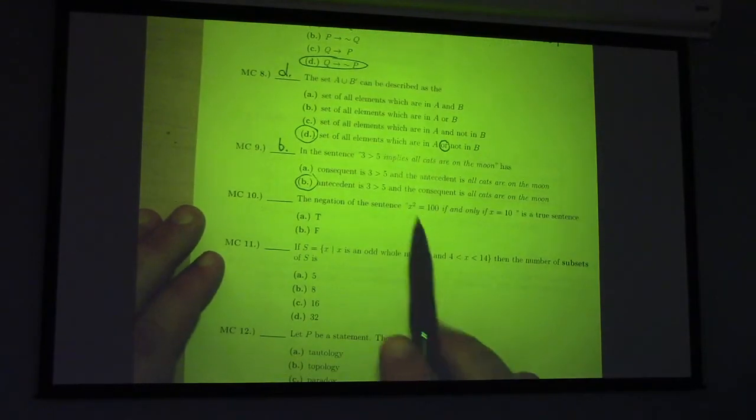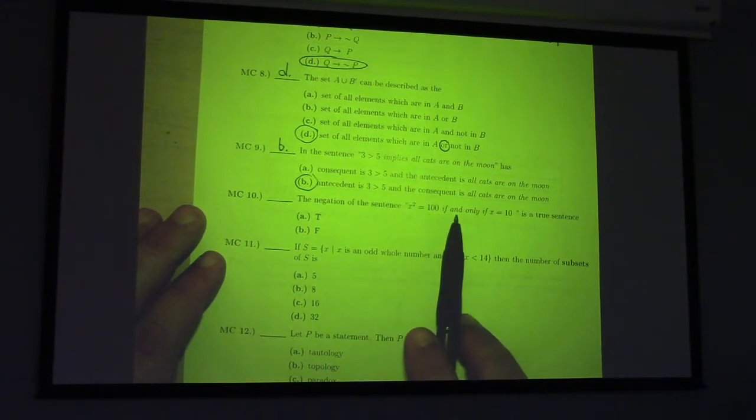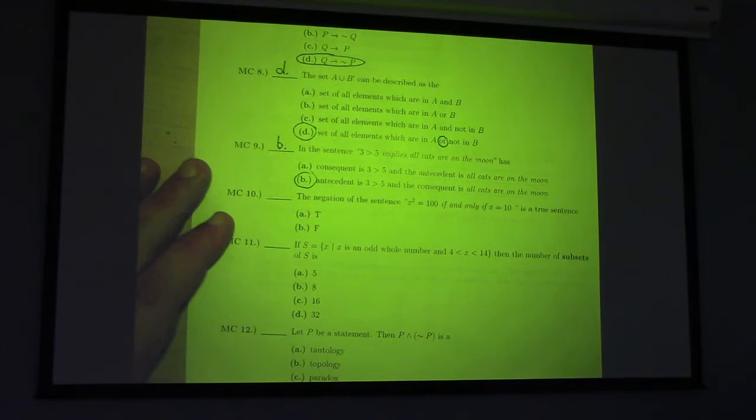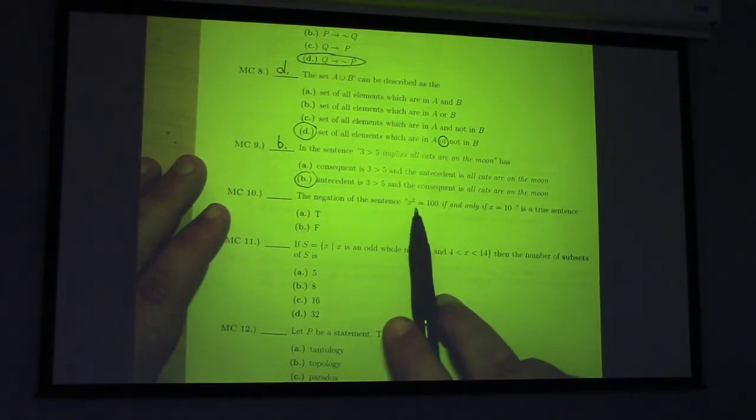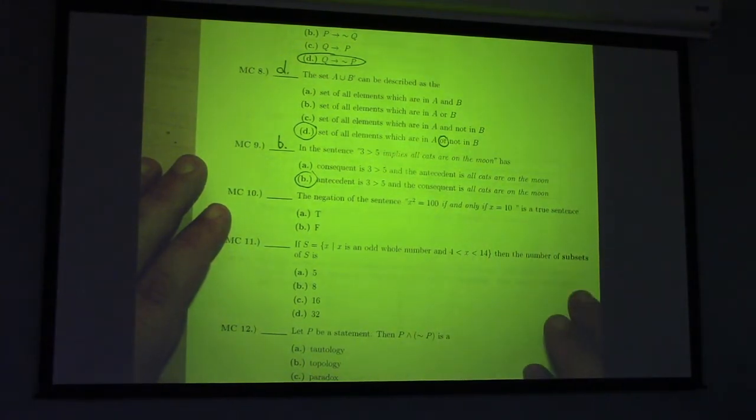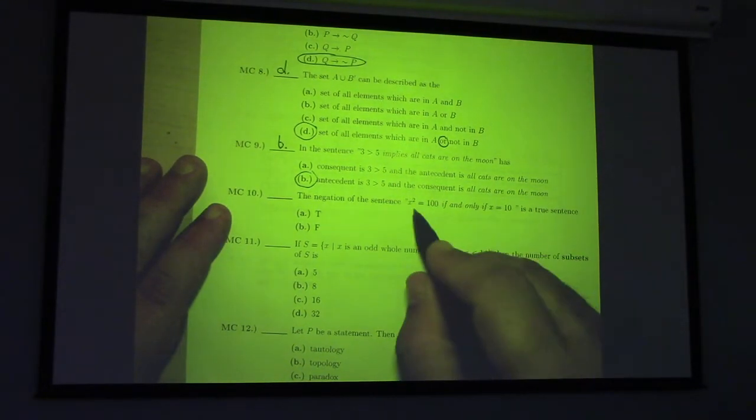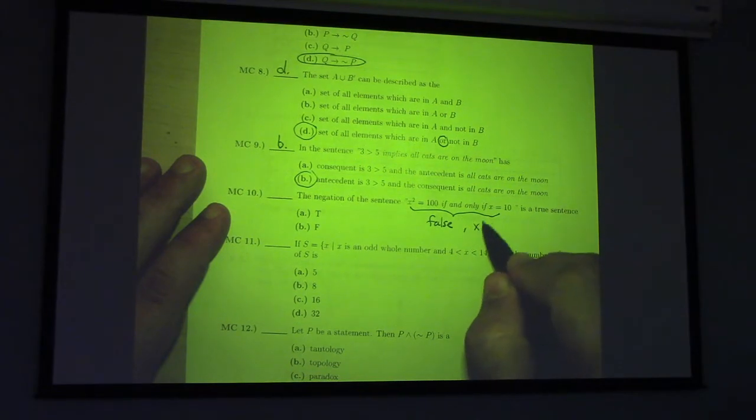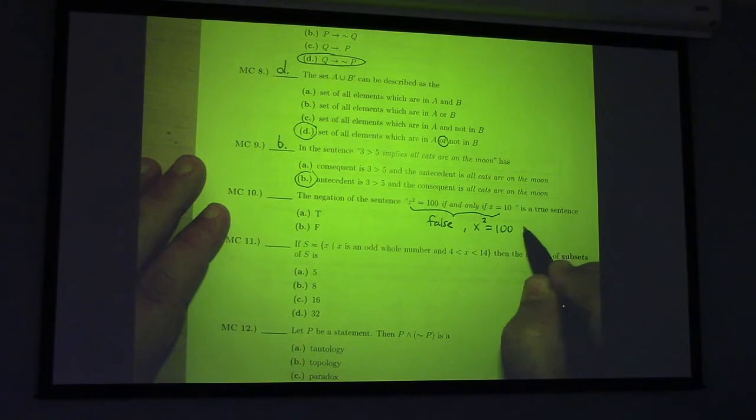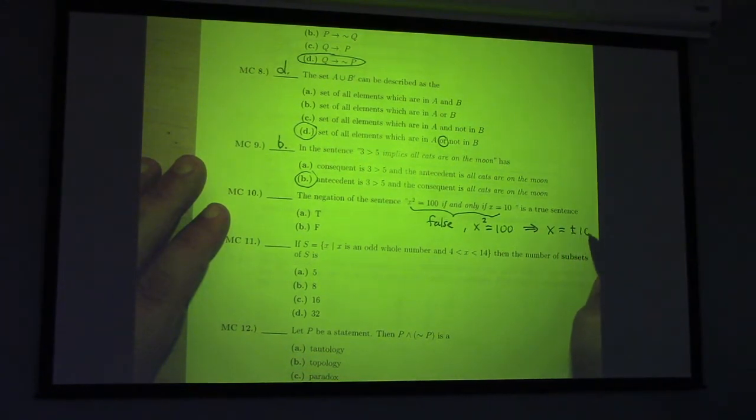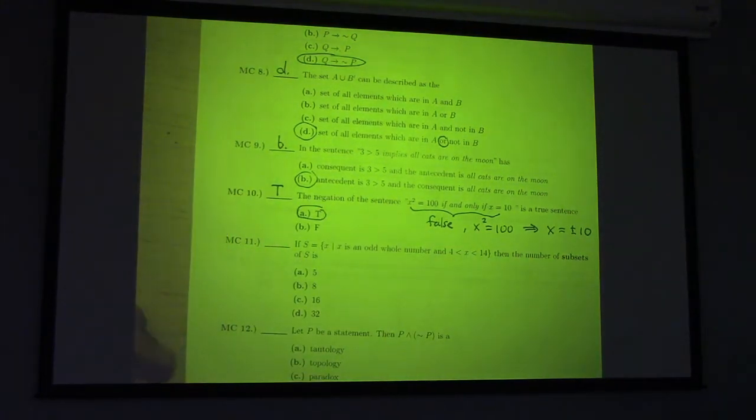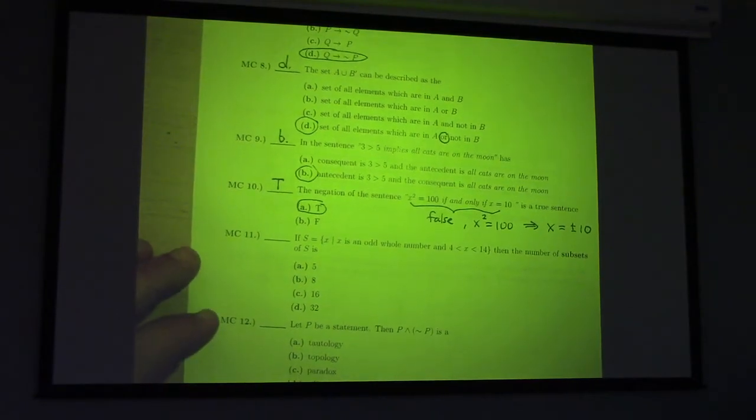All right, the negation of the sentence, x squared equals 100, if and only if, x equals 10, is a true sentence. What do you guys think? So, this right here is a false sentence, right? Why is it false? X squared equals 100 actually implies x is equal to plus or minus ten. So, the original sentence is false, which means the negation of the sentence is true. That's true. The theory of always being true is holding true so far.